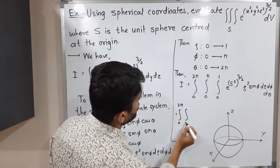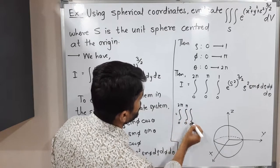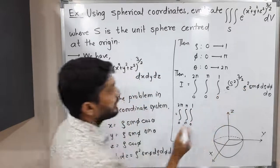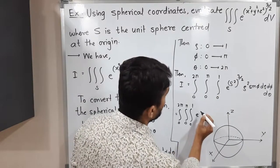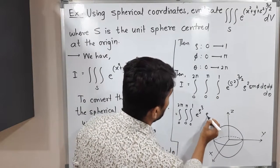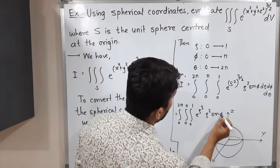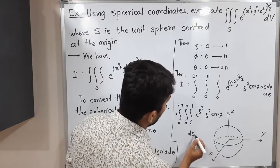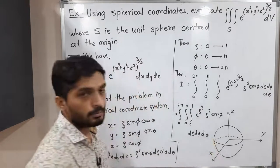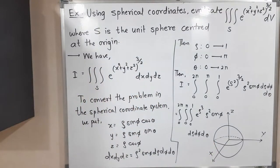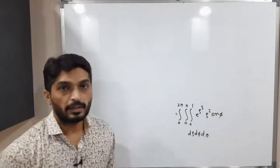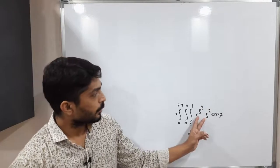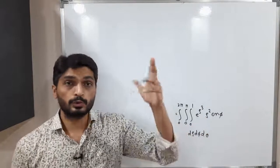So the integral becomes: integration from 0 to 2π, integration from 0 to π, integration from 0 to 1 of e^(ρ²) raised to (3/2) times ρ² sin φ dρ dφ dθ. The 2 and the (1/2) in the exponent cancel, giving simply e^(ρ³) times ρ² sin φ dρ dφ dθ.